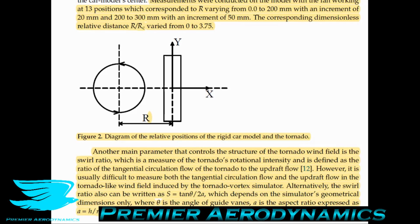Another main parameter controlling the tornado wind field structure is the swirl ratio, which is a measure of the tornado's rotational intensity and is defined as the ratio of the tangential circulation flow to the updraft flow. The greater the tangential circulation flow compared to the updraft flow, the greater the swirl ratio. However, it's usually difficult to measure both in the tornado-like wind field. Alternatively, the swirl ratio can be written as S = tan(θ) / 2A, which depends on the simulator's geometrical dimensions only, where θ is the angle of the guide vane and A is the aspect ratio — the height of the simulator over the platform divided by the updraft hole radius.